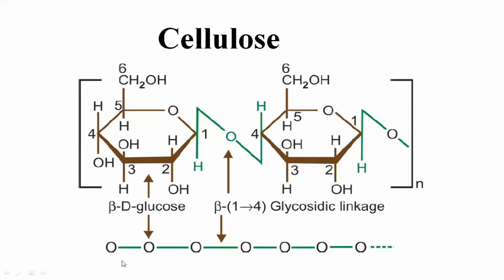In cellulose, these glucose units are linked by a specific glycosidic bond known as the beta-1,4 glycosidic linkage. Each glucose unit is held together by bonds between the first carbon and the fourth carbon, with the OH group on the upper side — making it beta. So it is beta-D-glucose linked with beta-D-glucose through beta-1,4 glycosidic linkages.